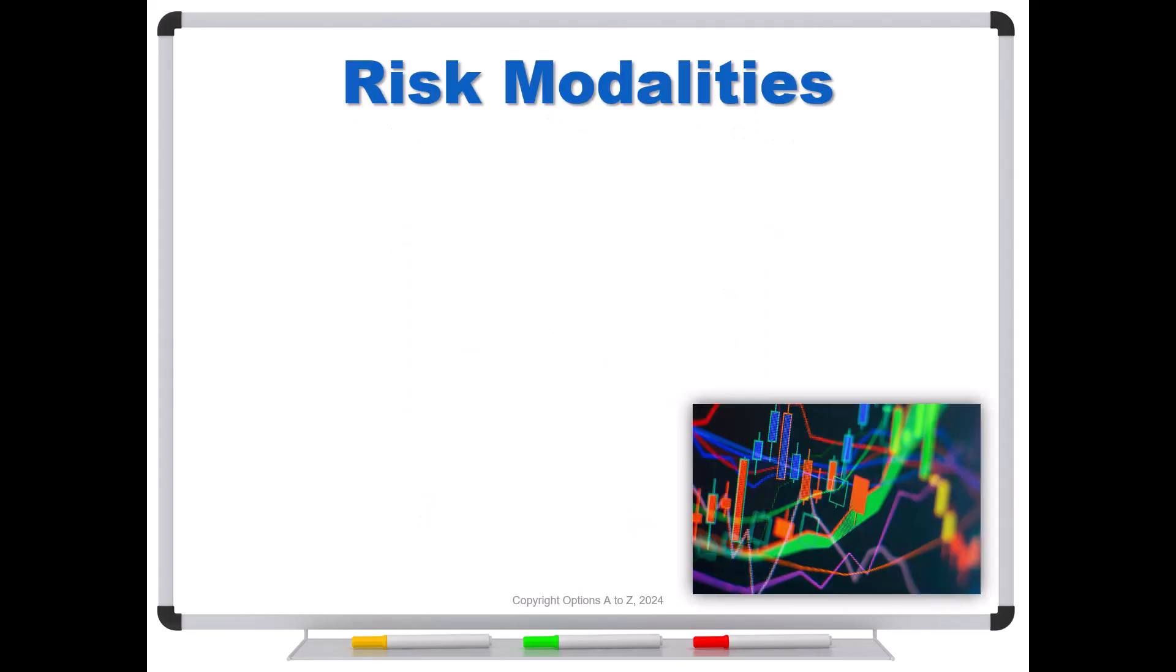So, risk modalities. Just remember that option strategies can change your Greeks, delta, gamma, theta, vega, and rho, as stock, time, and volatility change. Very rarely do things stay constant.